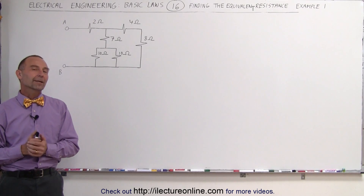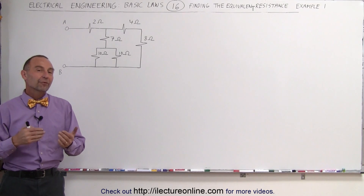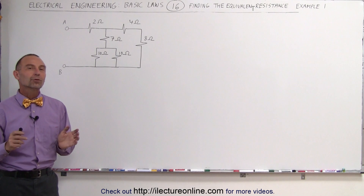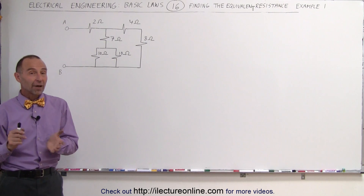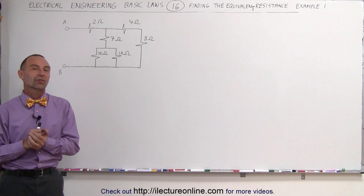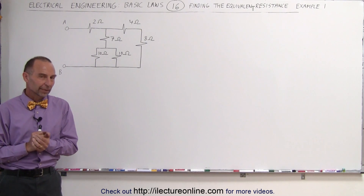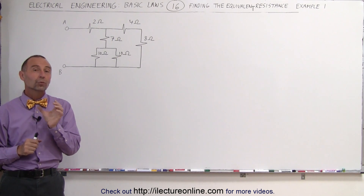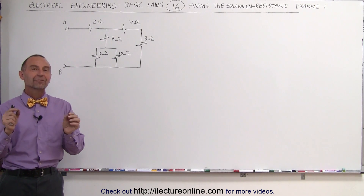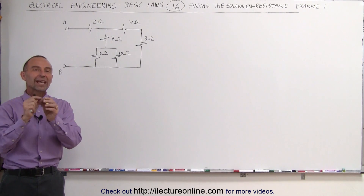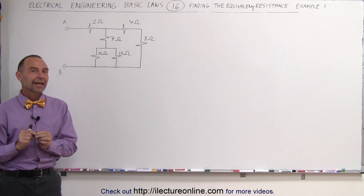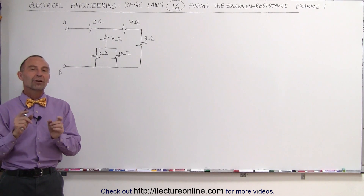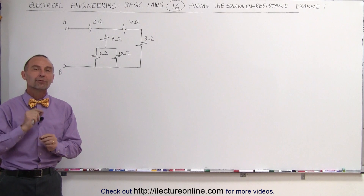Welcome to our lecture online. In this video, along with a few more videos to come, we're going to do some examples of how to find the equivalent resistance of some circuits. We use two rules: two resistors are in series if they share the same node exclusively, and two resistors are in parallel if they each share a pair of nodes.